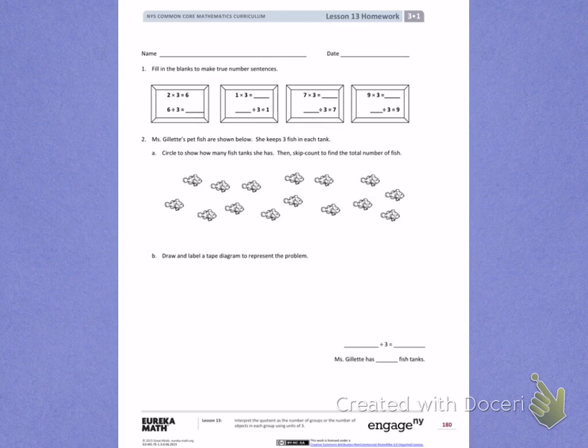Number 1. Fill in the blanks to make true number sentences. 2 times 3 equals 6. 6 divided by 3 would be the opposite of that, meaning that I would have 6 total.